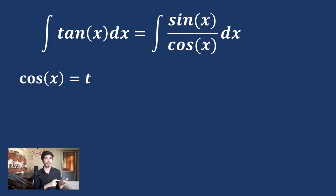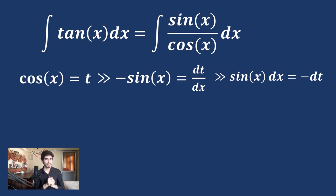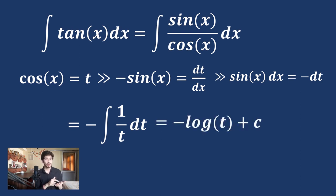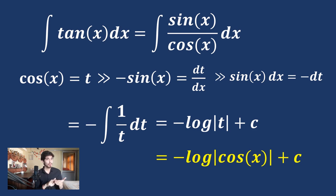We are converting this integration to a t variable. To find dt, we take its derivative: the derivative of cos x is minus sin x and derivative of t is dt/dx. Taking dx to the other side gives us sin x dx = minus dt. In our integration, sin x dx becomes minus dt and cos x becomes t. This integration now looks familiar — the derivative of log x is 1/x, so the integration of 1/t is log t. Therefore, the integration of minus 1/t is minus log|t| + c. Since the log function is not defined for negative values or zero, we write minus log|t| + c, and re-substituting t = cos x gives minus log|cos x| + c.